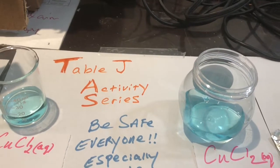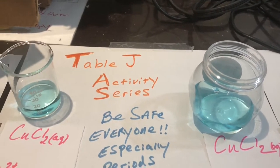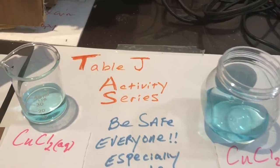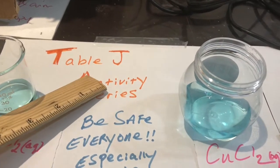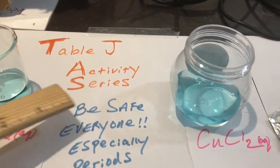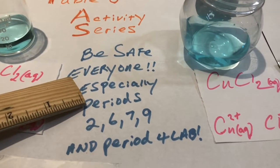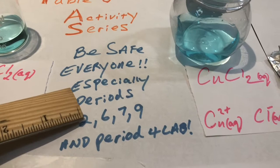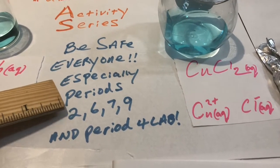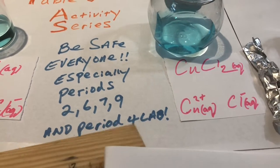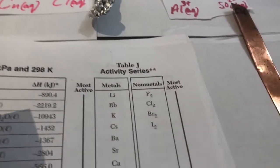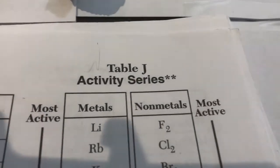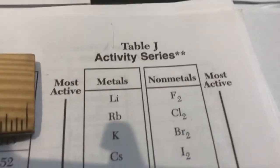Hi guys, this is Mr. Adams from Midwood High School and this is a video on Table J activity series. What we're going to do today, we're going to look at Table J and the activity series. If you notice at the top, the most active metals tend to be higher, and the metals as you go down lower tend to be less active.